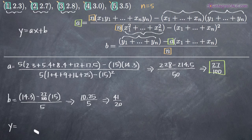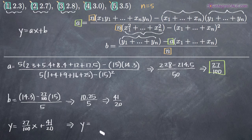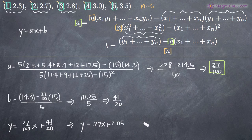Now I have both a and b and can write the equation for y. Remember y = ax + b, so we get y = (27/100)x + 41/20. Converting to decimals, that's y = 0.27x + 2.05. This is our least squares line, and we're finished with half of the problem.